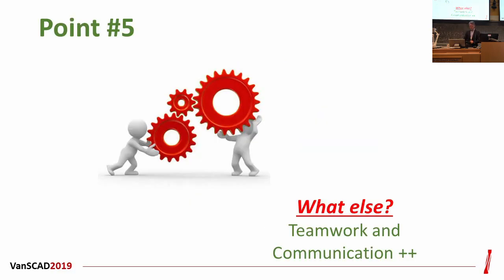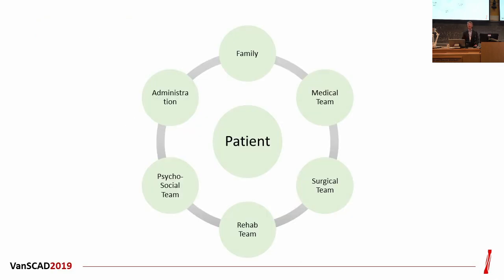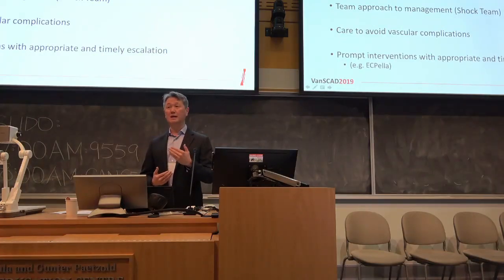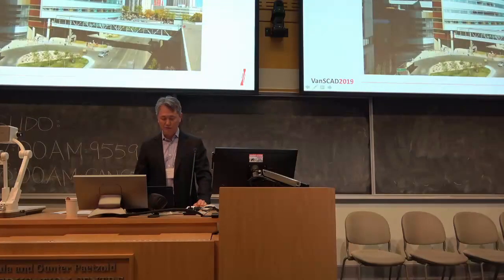Point number five: communication with the team — including not only the patient but also family and other team members — becomes critical, both at the time of the acute event and moving forward as the patient either recovers or otherwise. To summarize: SCAD patients are at high risk for cardiogenic shock, especially if pregnancy-associated. There is limited data on optimal management, which is why a team approach is important so that input and expertise can produce a consensus that's good for the patient. It is specifically important in SCAD patients to avoid vascular complications and to escalate in a timely manner.